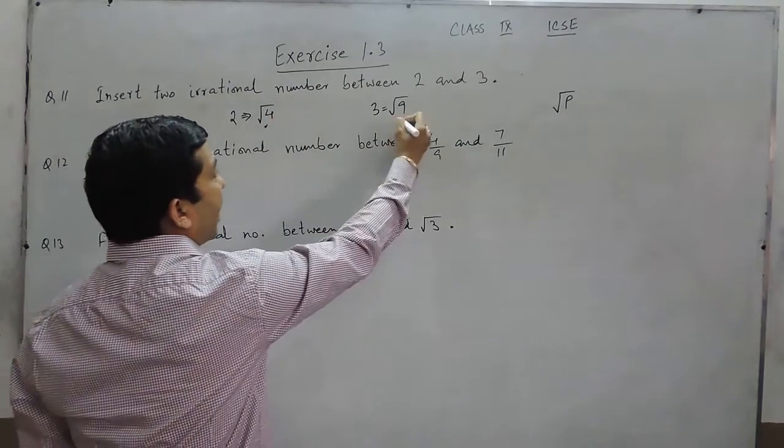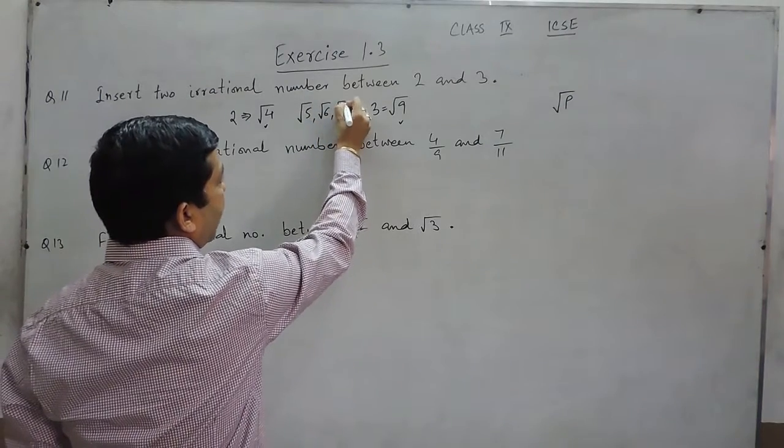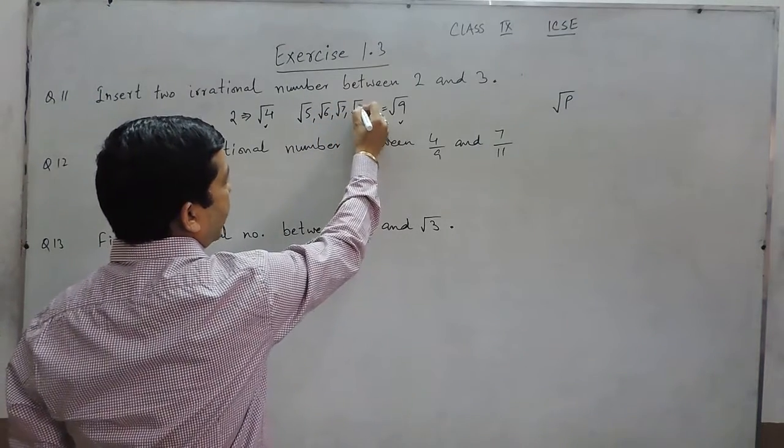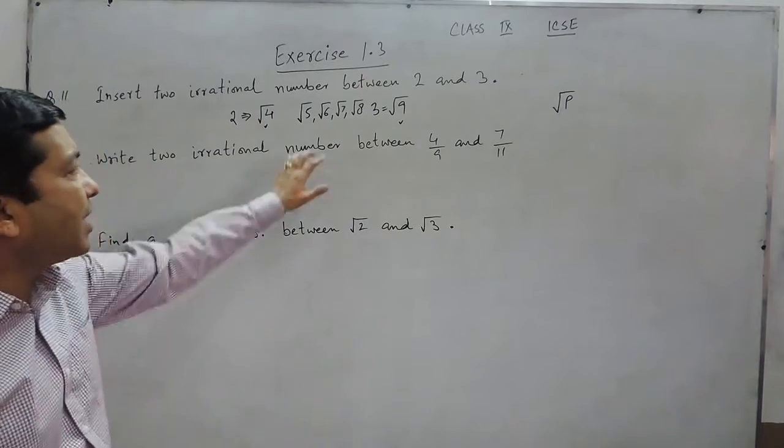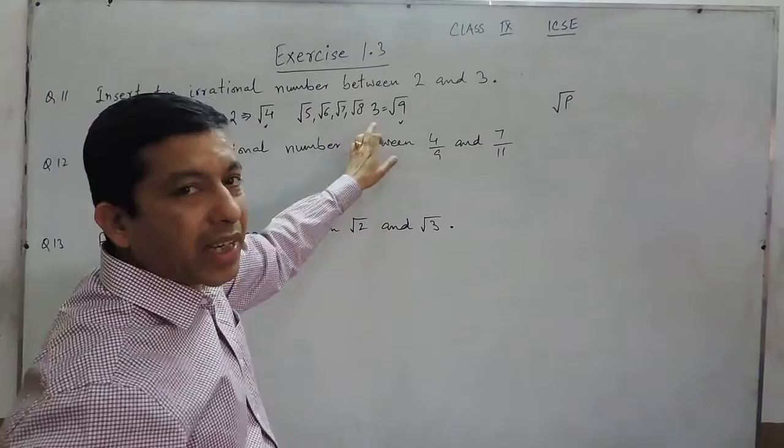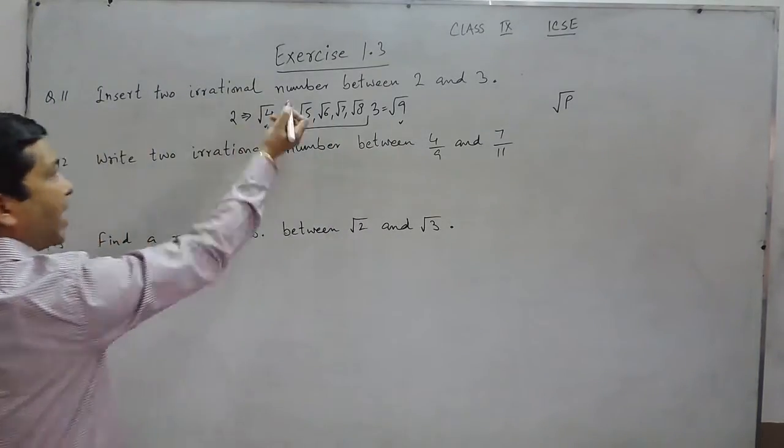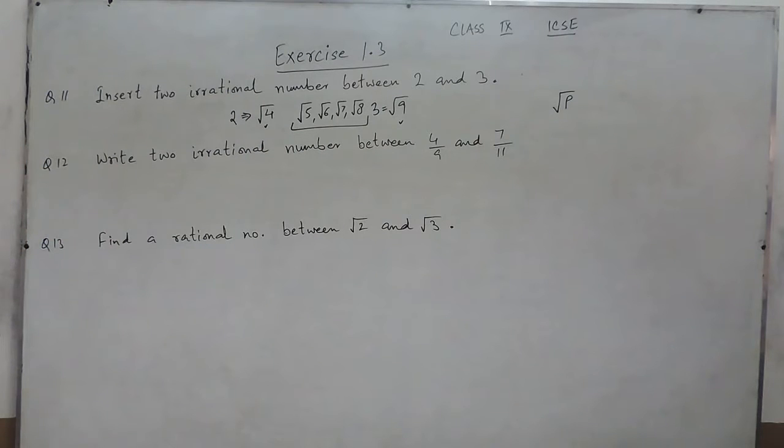So between 4 and 9, all the numbers like under root 5, under root 6, under root 7, under root 8, definitely all these numbers are between 2 and 3, and because they are not the perfect squares, so they are irrational numbers. So out of these 4, I can write any 2 irrational numbers between 2 and 3.